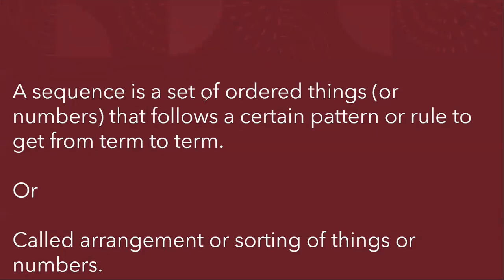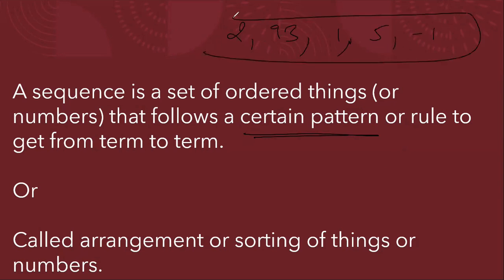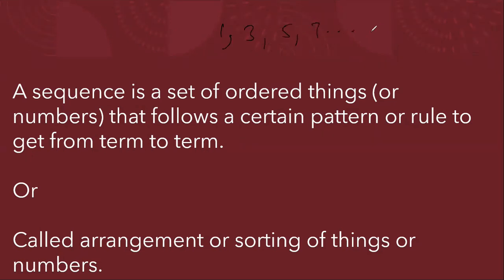The definition of sequence: it is a set of ordered things with a certain pattern. It is not necessary that sequence is only in mathematics — it can be in day-to-day life. I can't write 2, 93, 1, 5, -1 — that is not a sequence because there is no set pattern. But if I write 1, 3, 5, 7, and so on, there is a set pattern: in every previous term I am adding two to get the next term.